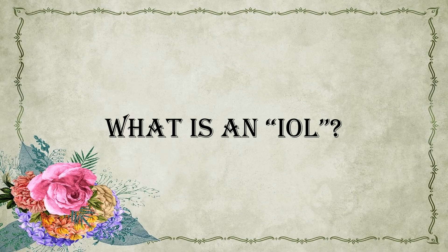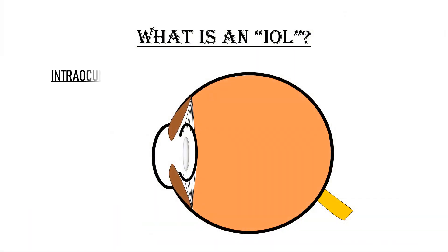What is an IOL? IOL is short for intraocular lens. Intra means inside, ocular means eye — so IOL refers to a lens placed inside the eye. It is the artificial lens that is implanted in your eye after your natural lens is removed during cataract surgery.